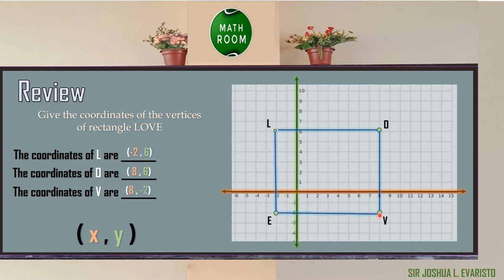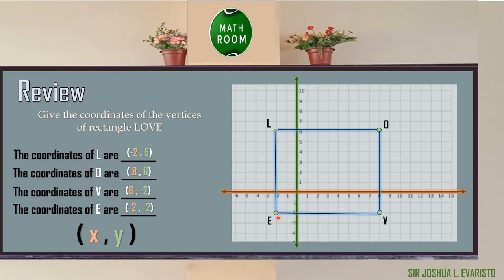The coordinates of point V are 8 comma negative 2, because the X-coordinate is 8 and the Y-coordinate is negative 2. And lastly, the coordinates of point E are negative 2, negative 2. Since we already know how to get the coordinates of each point in a Cartesian plane.